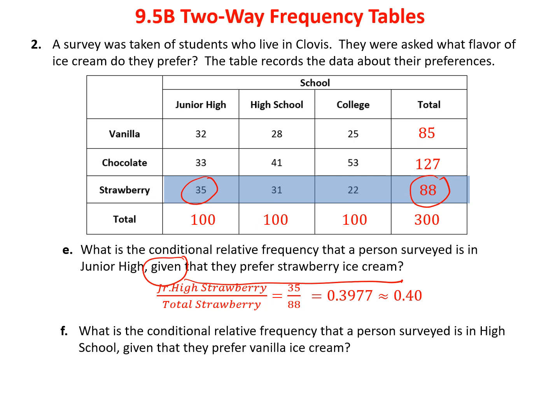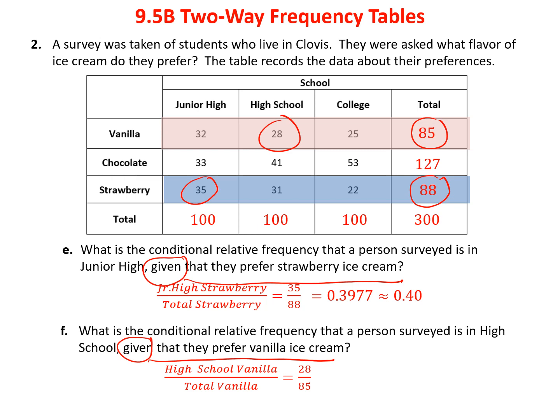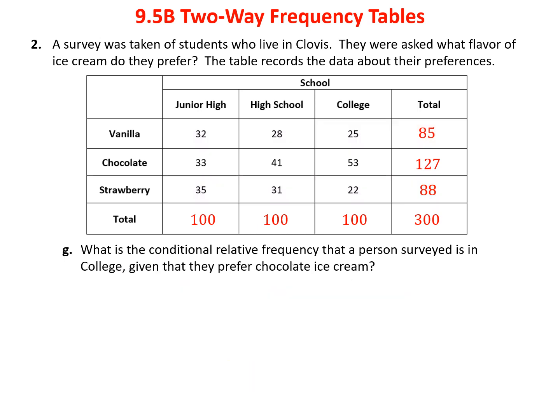The relative frequency can be based on the column — junior high, high school, or college — or it can be based on the row by flavor. What's the conditional relative frequency that a person is in high school given they prefer vanilla? The total of vanilla is 85, and 28 of those were in high school. So the conditional relative frequency is 28 over 85, or about 33%. If somebody says they like vanilla, there's about a one-third chance that person is in high school.